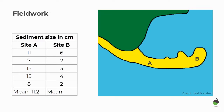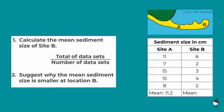Fieldwork time. Here's my spit. We've gone out, we've collected some data, and we've found that the sediment size at site A and the sediment size at site B, down at the end of the spit, are different. I would like you to calculate the mean sediment size of site B. I've given you the mean of site A, which is 11.2. Secondly, I want you to suggest why the mean sediment size is smaller at location B.